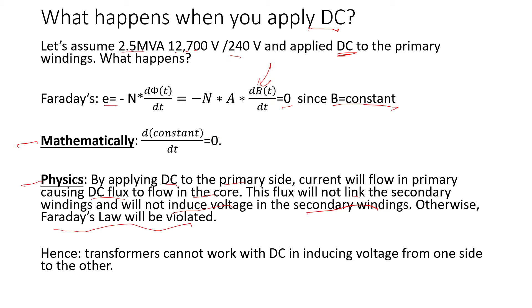Otherwise Faraday's law will be violated, and that's the reason why we apply AC or alternating current or voltage. Hence, transformers cannot work with DC in inducing voltage from one side to the other. In other words, if you apply DC to the primary, nothing will happen on the secondary.